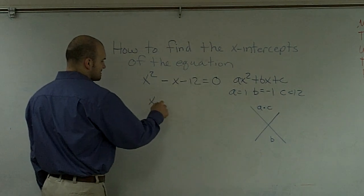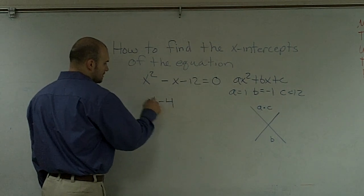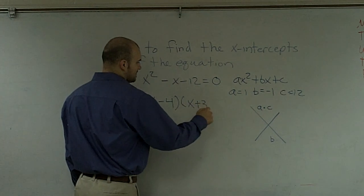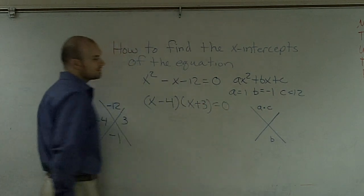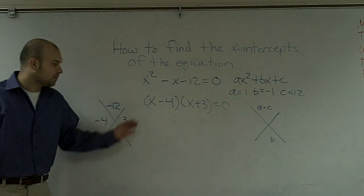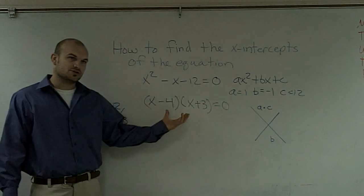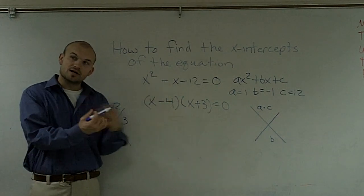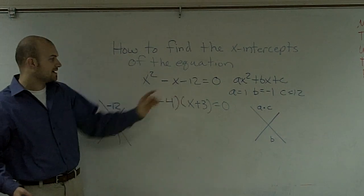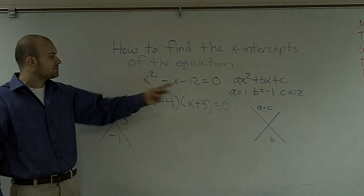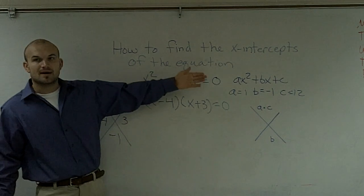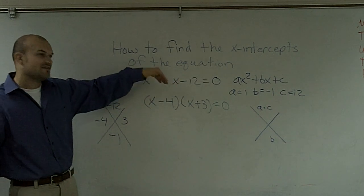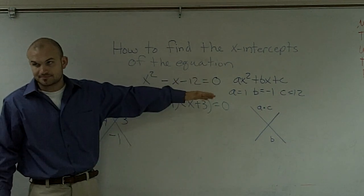Therefore, we have x minus 4 times x plus 3 equals 0. An important point here is that if you use FOIL techniques, which we've done before, and FOIL this back out, you will get x squared minus x minus 12. So all this is, is you took a trinomial and factored it into two different binomials.